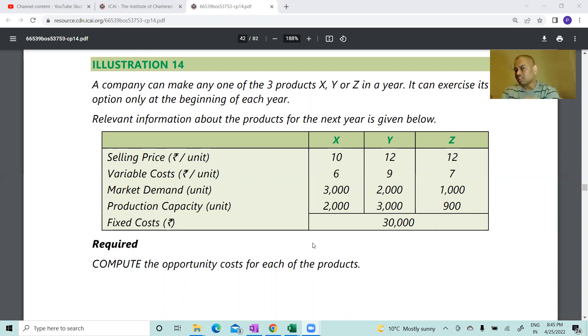Let us see this. A company can make only one of the three products X, Y, or Z in a year. It can exercise its option only at the beginning of each year. So this year if you commit to one product, the full year you have to manufacture that product only. The relevant information about the products for the next year is given below: selling price 10, 12, 12; variable cost 6, 9, 7; market demand units 3000, 2000, 1000; production capacity units 2000, 3000, 900.